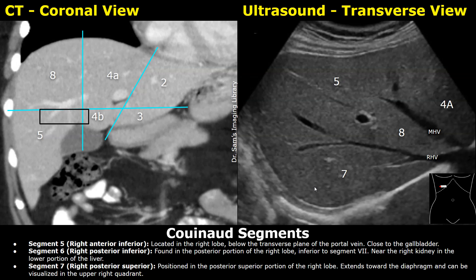Segment 7 will be between the right hepatic vein and the diaphragm — it is the posterior superior portion of the right lobe. These are the superior parts of the liver, visible because of angling. The diaphragm and the hepatic veins are visible, and segment 4a, which is in contact with the diaphragm, is also visible.